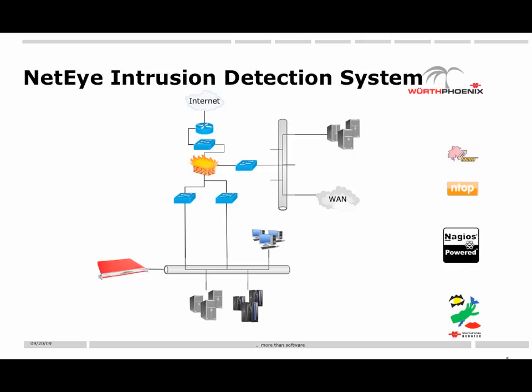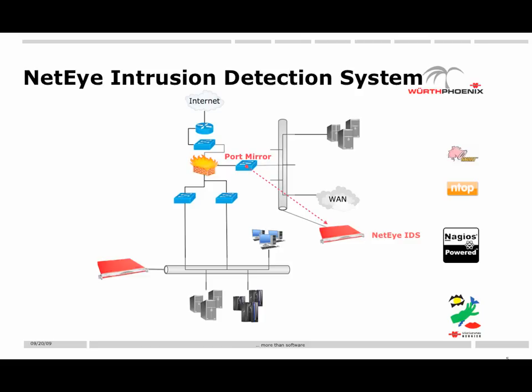To deploy NetEye, an additional appliance is required to implement it in crucial network segments like DMZ or before the firewall. There are two ways to send the entire network traffic to the NetEye IDS for inspection. One way is to use a network tap, which passively sends the network traffic to the appliance and has a LAN bypass capability so that it is not critical if it breaks or loses power. A second way is to configure port mirroring on the network switch.